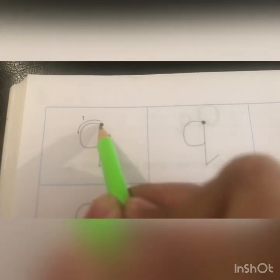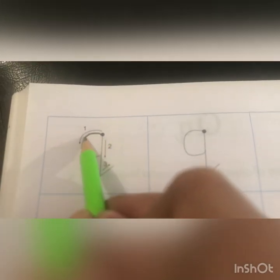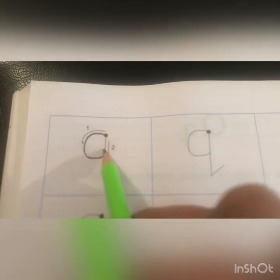We will start from the dark dot. We will make a bumpity, go up, come down and give a kick. Okay, again, start from the dark dot, a bumpity, go up, come down and give a kick. Q, Q says Q. Again, bumpity, go up, come down and give a kick.